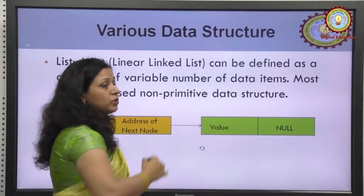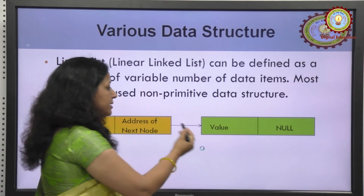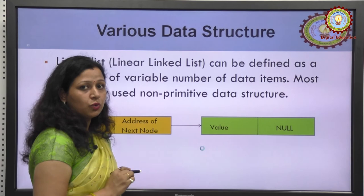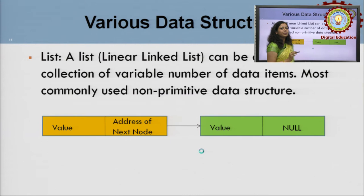Suppose you want to create a linked list of five numbers — you use five nodes. Node 1 stores number one and the address of node 2. Node 2 stores number two and the address of node 3. Continuing this way, when you reach the last node, its next part contains null. This is a very interesting and popular concept with many applications.